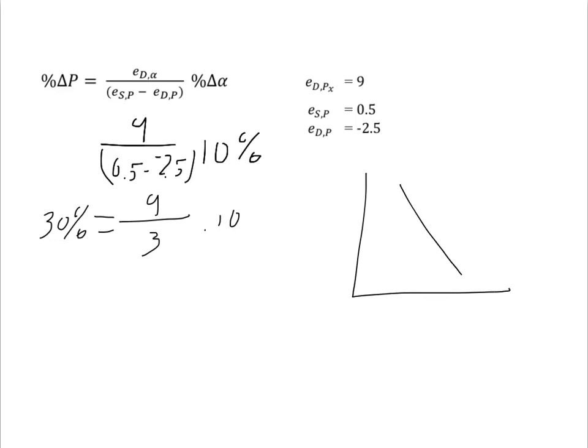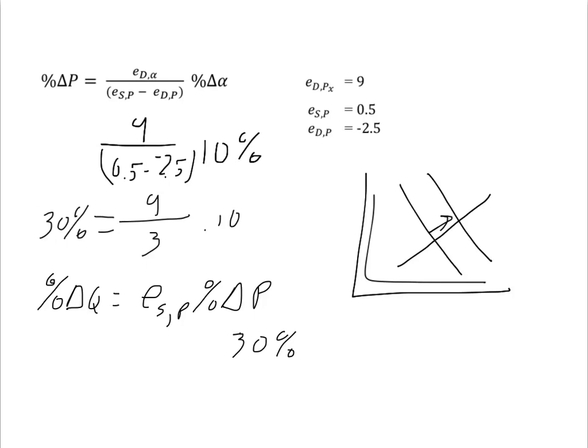Only demand has shifted, so the price increase results in a movement along the supply curve. The percentage change in quantity is equal to the elasticity of supply multiplied by the percentage change in price. So, the 30% change in price multiplied by 0.5 equals a 15% change in quantity supplied, that is, quantity sold in equilibrium.